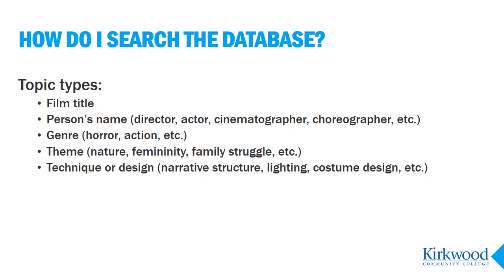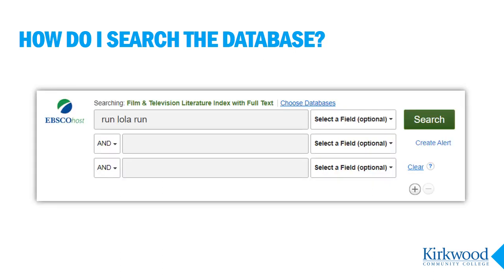We'll start with some examples of keyword searching. Most often you will have a topic in mind that you want to search, such as a film, the name of an actor or director, or a theme or genre. Film and TV Index supports all these types of keywords. You mostly want to keep the keyword terms as simple as possible. For example, if I want to read some commentary or analysis of the film Run Lola Run, I can just enter that title as a keyword search, typing the whole title into the first search box and leaving the other text boxes empty.